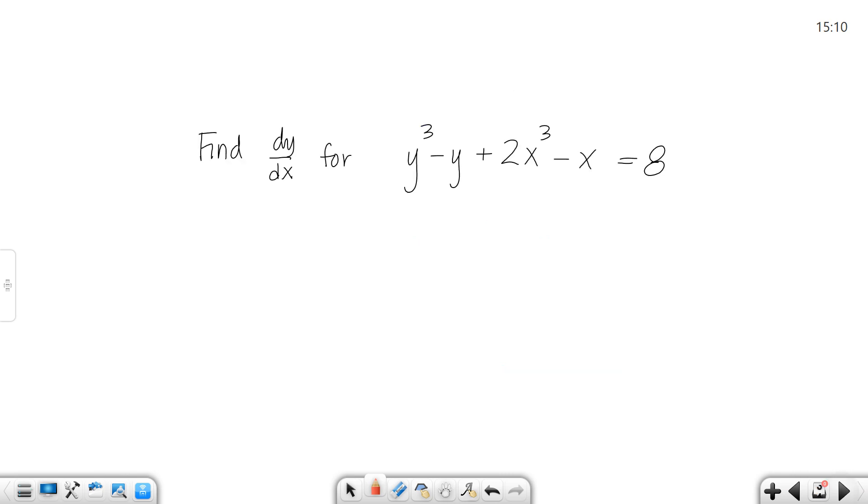Alright, let's try another one. When I take the derivative with respect to x, I'm going to get 3y² dy/dx - 1 dy/dx plus 6x², no dy/dx there, minus 1, no dy/dx there, equals 0.